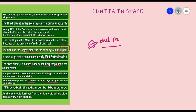The eighth planet is Neptune. As this planet is farthest from the sun, cold winds blow here at very high speed. It is very cold there because it is very far from the sun, so coldness remains there.